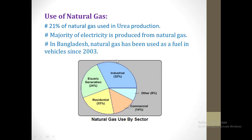Use of natural gas: in this bar diagram we see which sectors mainly use natural gas. In industrial purposes, 32% of natural gas is used. In electricity production, 24% of natural gas is used. In residential purposes, we use 22% natural gas. For commercial purposes, 14%, and for other purposes, 8% of natural gas is used.